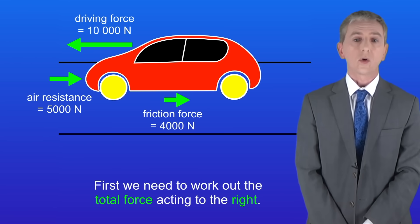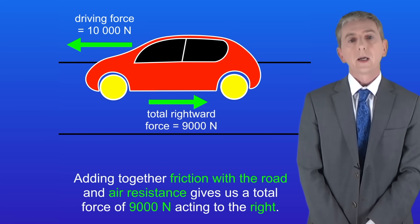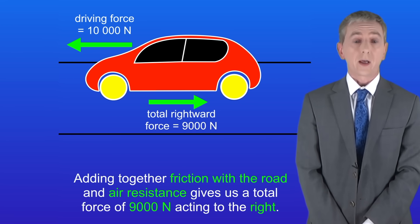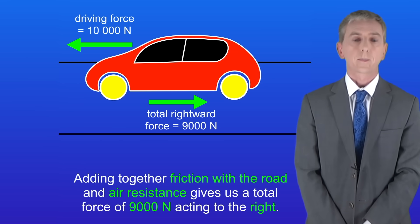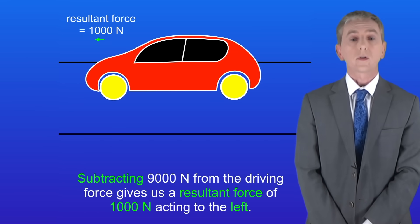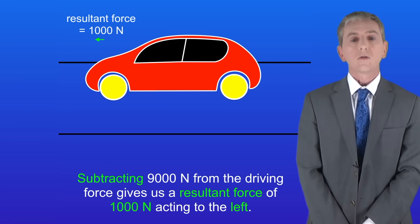First we need to work out the total force acting to the right. Adding together friction with the road and air resistance gives us a total force of 9,000 newtons acting to the right. Subtracting 9,000 newtons from the driving force gives us a resultant force of 1,000 newtons acting to the left.